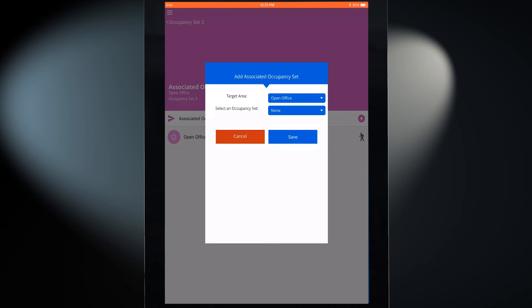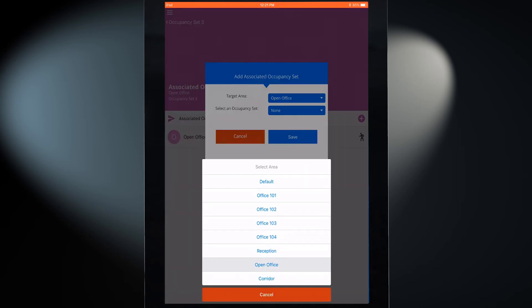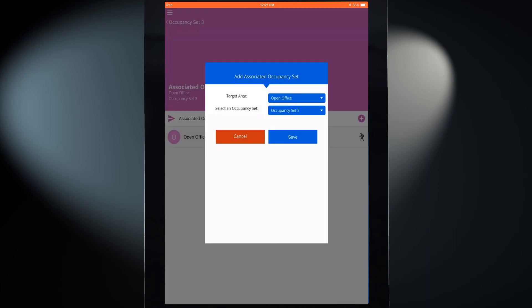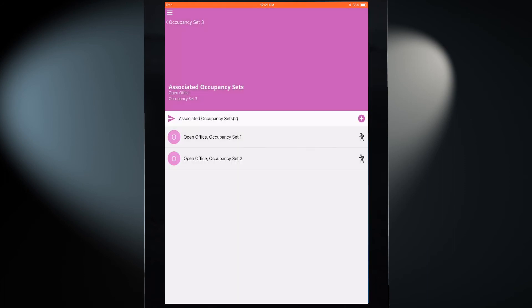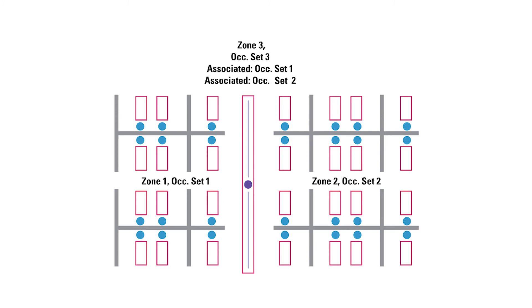Next, repeat the steps to create an additional association to Occupancy Set 2. While cubicle lighting will respond to commands only from sensors within their zones, the walkway zone will now respond to occupancy commands from any sensor in the walkway or cubicle zones.